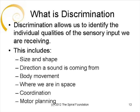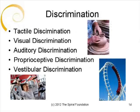Sensory discrimination allows us to identify the individual qualities of the sensory input we are receiving. This includes recognizing the size and shape of objects, the direction a sound is coming from, how our body moves, and where our bodies are in space. Discrimination of sensory information allows us to perform skilled activities involving coordination and motor planning. Tactile discrimination is the ability to register that input in your environment is touching you or that you are touching something. This is important for the development of body schema, fine motor skills, and motor planning. Visual discrimination is the ability to determine where something is and the position it is in. This allows us to determine the relation and qualities of objects in our environment. Visual discrimination is also important in the development of spatial and safety awareness and social interaction.